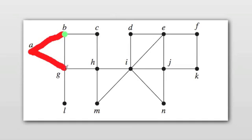So now we're at B and G. From B, you can go to C. Remember, you can't go to G because G has already been visited. At G, you can go to H and L.